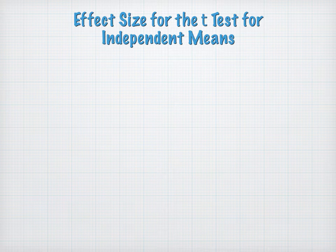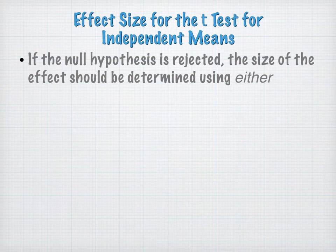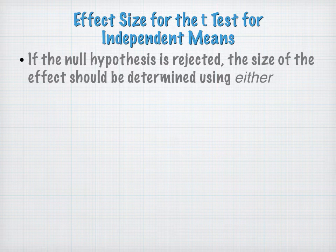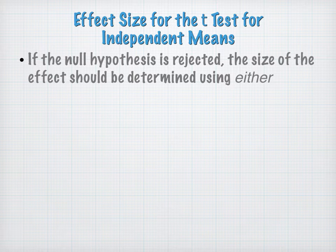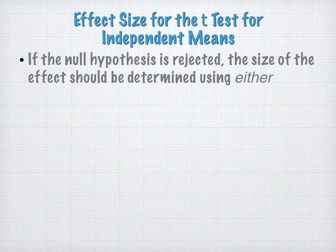The effect size for the T-test for independent means — we only do this if the null hypothesis is rejected. If we fail to reject the null, there's no reason to do a measure of effect size because there is no effect. We did not support the research hypothesis; we haven't found evidence of an effect. So again, we're only doing this when we reject the null.